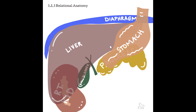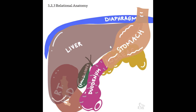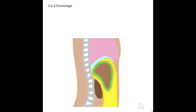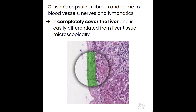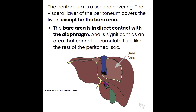The duodenum abuts the liver at the medial segment of the left lobe near the porta hepatis. The liver has two coverings. The first is Glisson's capsule, shown in green — a fibrous structure that is home to the blood vessels, nerves, and lymphatics of the liver. It covers the liver completely. Think of Glisson's capsule as a glove for the liver. The second covering is the peritoneum, shown in orange. The peritoneum does not cover the entire liver — think 'partial peritoneum covering' with the P.